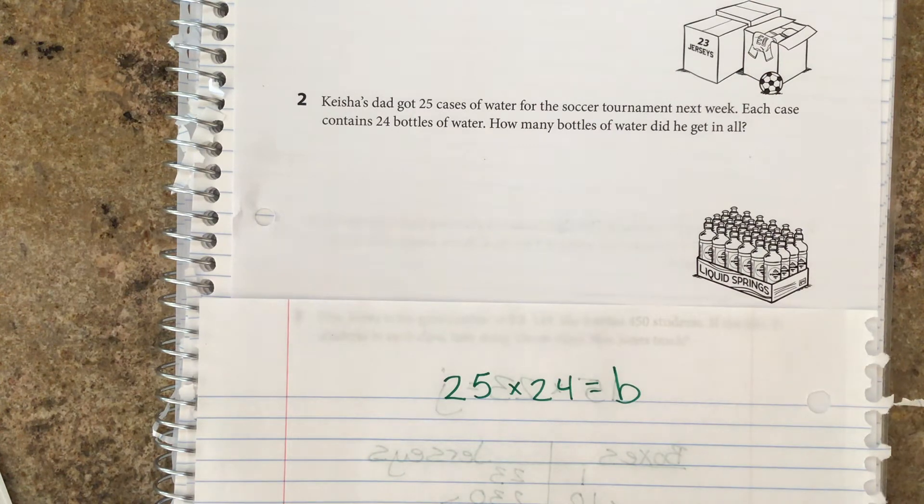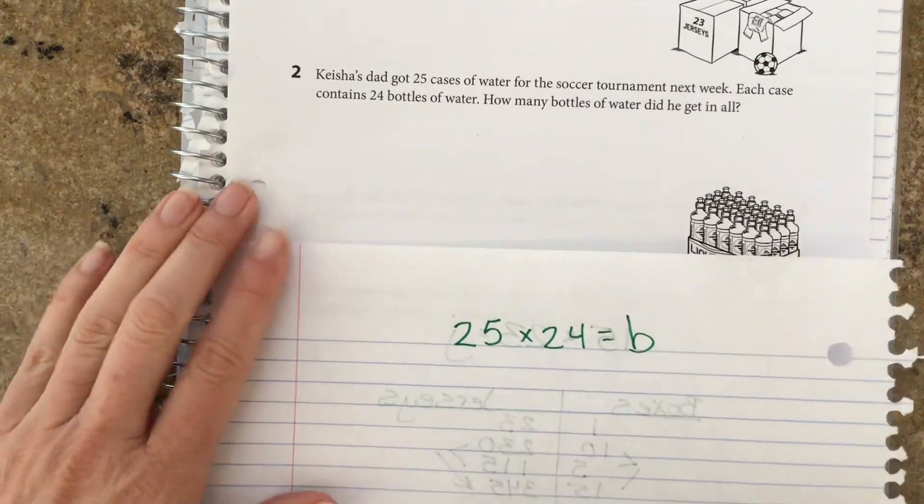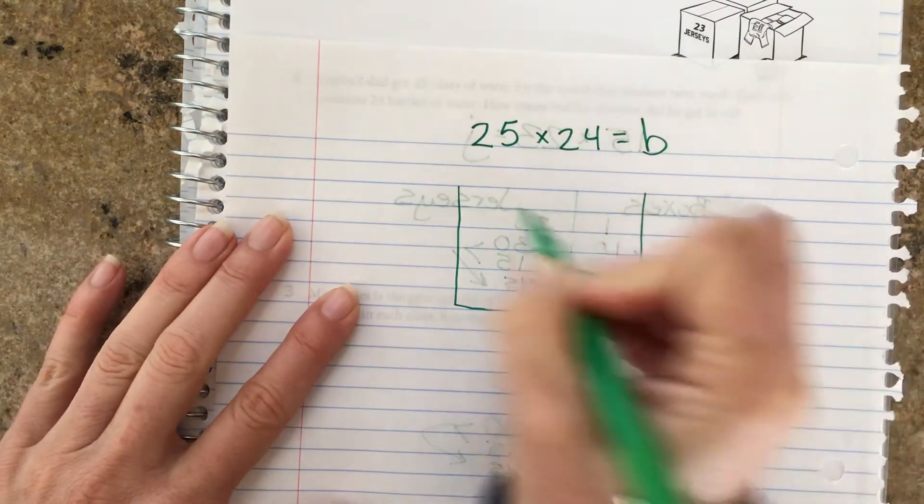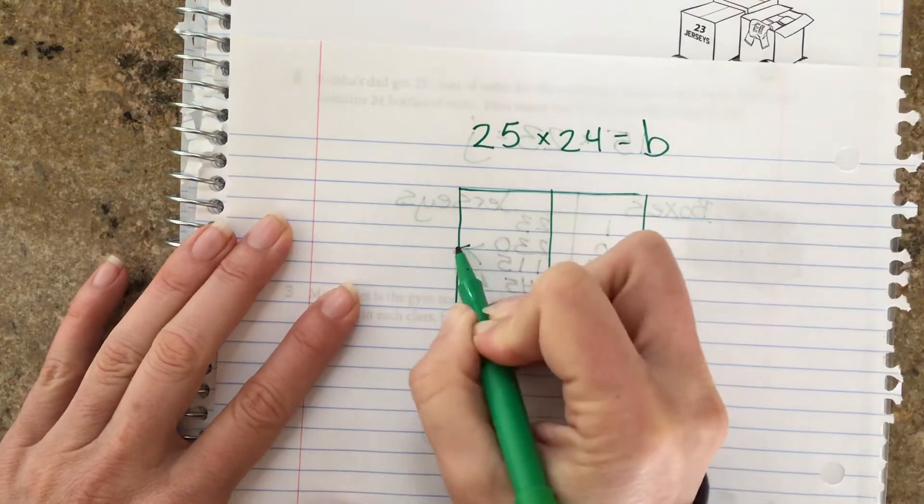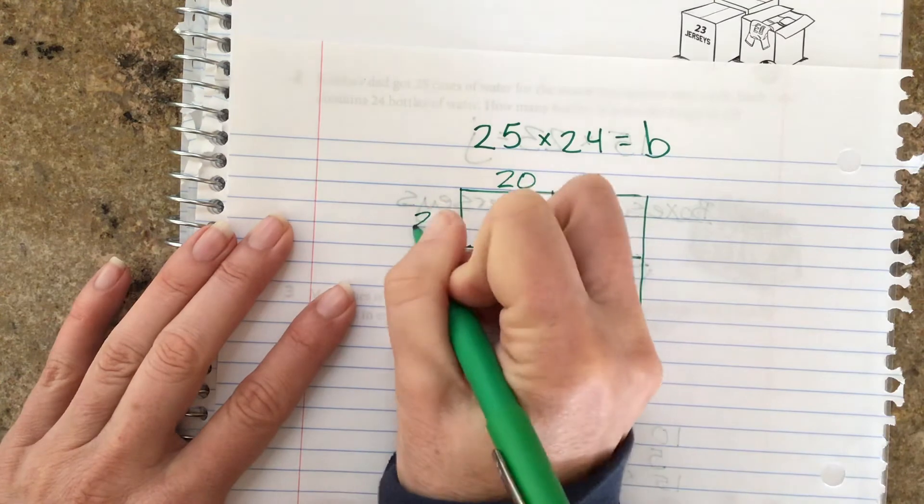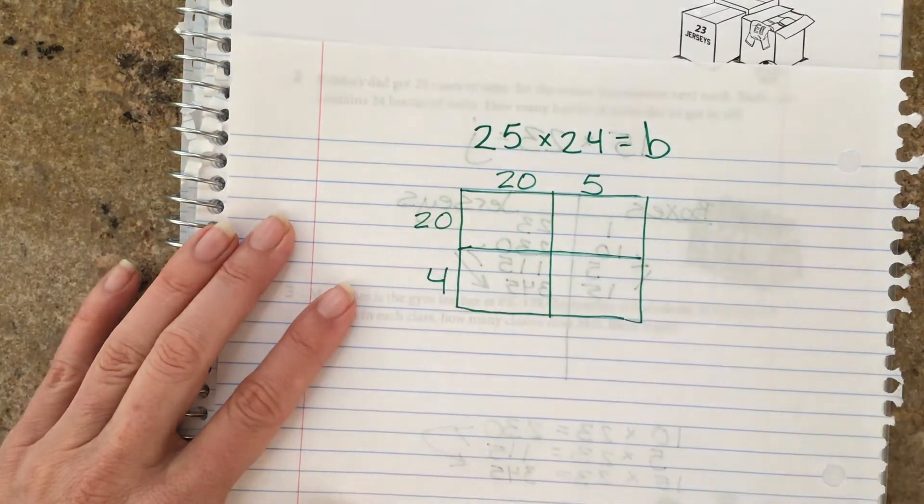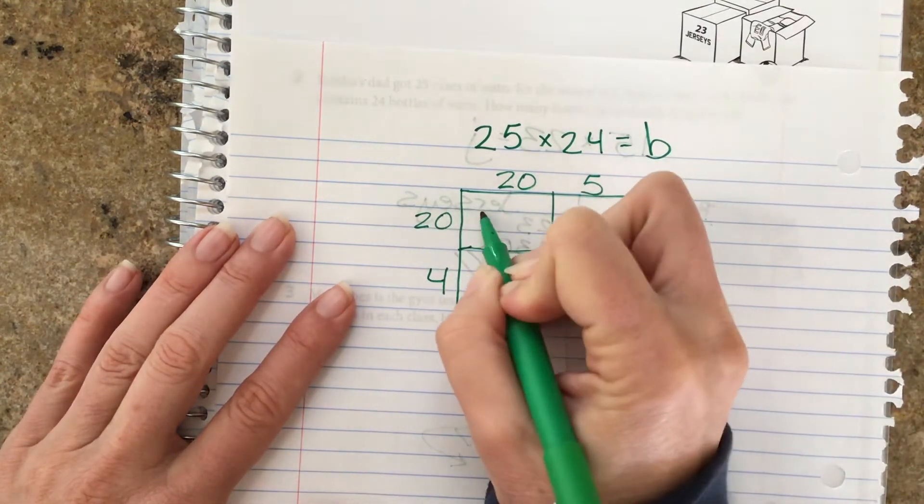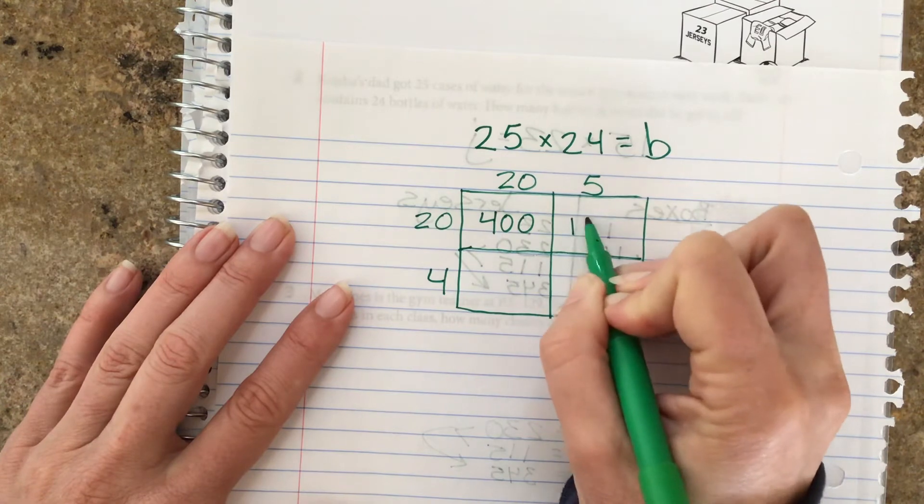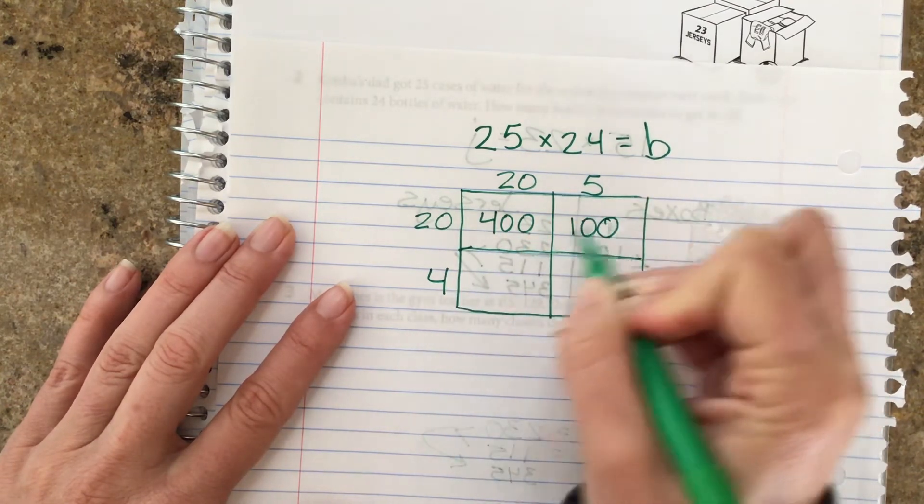Well, I wish I could see what you did. We'll talk about what I think you might have done. Okay, so you might have for this one done the box method. Give that a go. We've got 25 and 24.